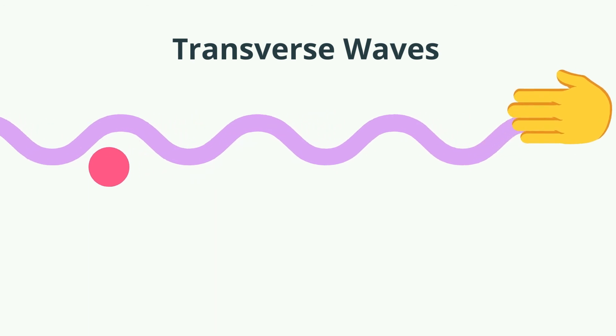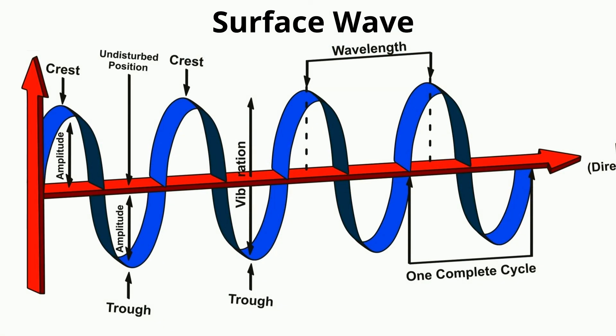Let's take a look at the anatomy of a surface wave. The crest is the highest point of the wave. The trough is the lowest point of the surface wave. The resting point of the surface wave is also called the undisturbed position.